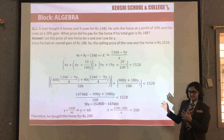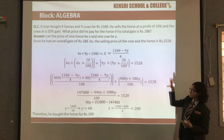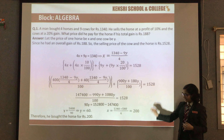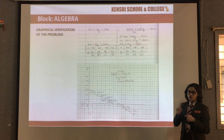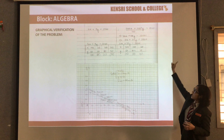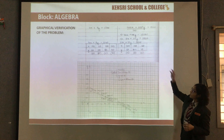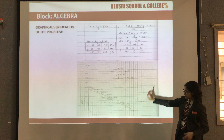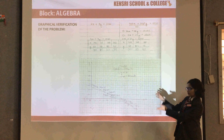To find the values of x and y, we first find x in terms of y, then substitute into the second equation and simplify. We get a value for y and substitute it back to find x. Since x is the cost price of the horse, he paid 200 rupees for each horse. To verify, we represent the equations graphically: the first equation is 4x + 9y = 1340, and the simplified second equation is 11x + 27y = 3820. Both lines meet at the point (200, 60), confirming x = 200.